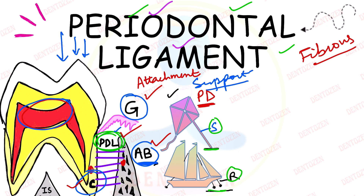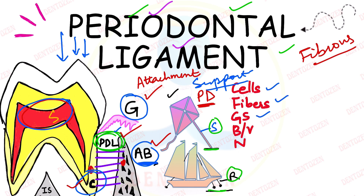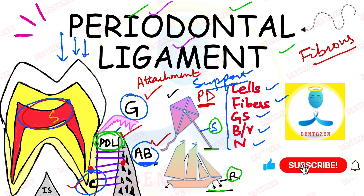Like pulp, which is a soft tissue with many components inside it, PDL also has many things inside it. These include cells, fibers, ground substance, blood vessels, and nerves. Let's get to know the most important components of PDL in this video.